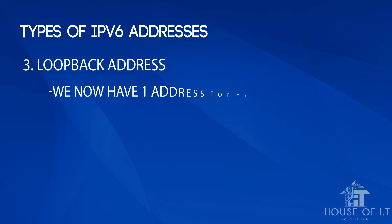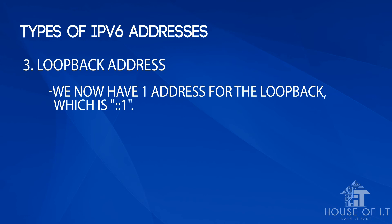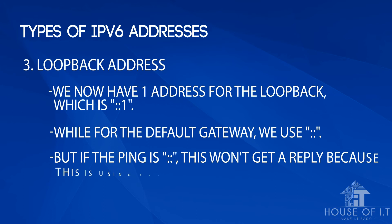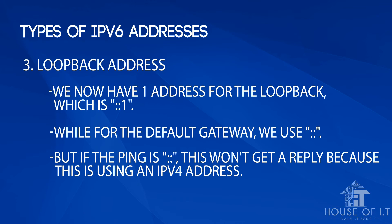For the loopback address, unlike IPv4 where they wasted the whole 127 IP range, we now only have one address for loopback, which is double colon 1 (::1). For the default gateway we use double colon (::), but if I ping double colon here I won't get a reply because I'm using an IPv4 address.